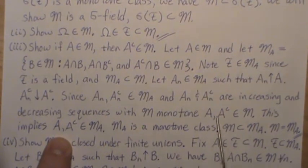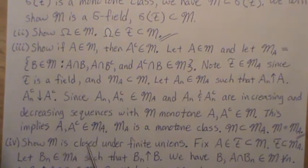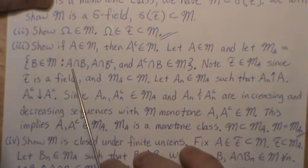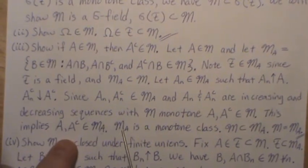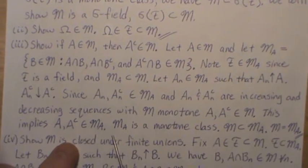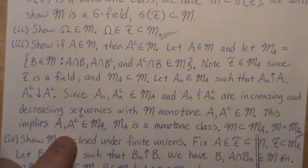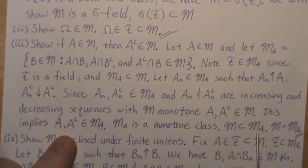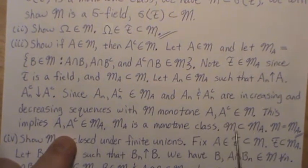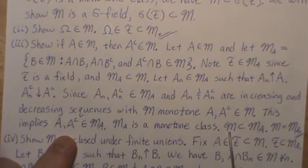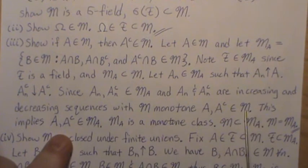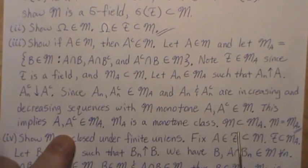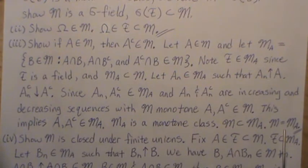Since A and Aᶜ are in M, M(A) is a monotone class. If M(A) is a monotone class containing F, then the minimum monotone class M must be a subset of M(A). But we said M(A) was a subset of M — so they're equal. Therefore M is closed under complementation.